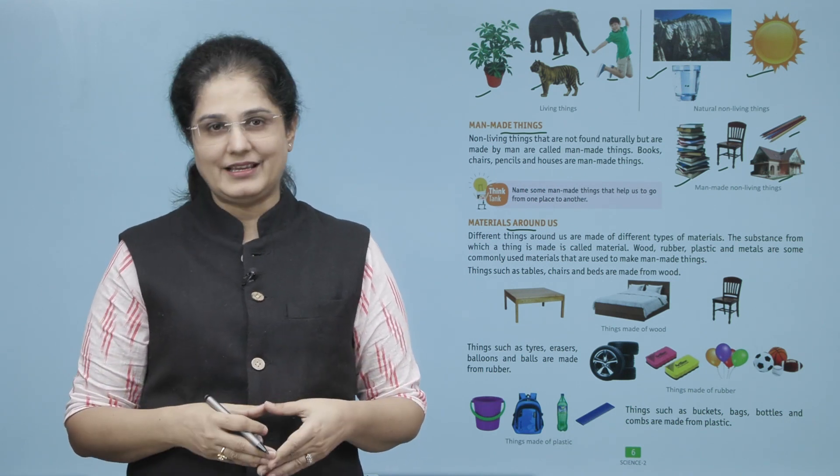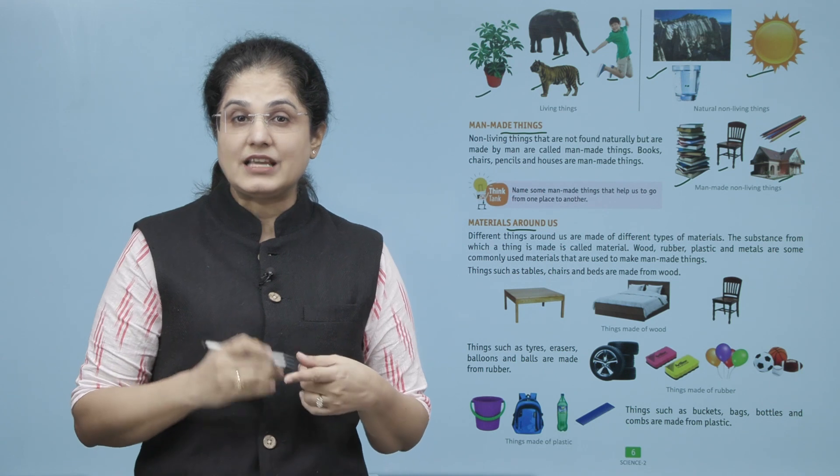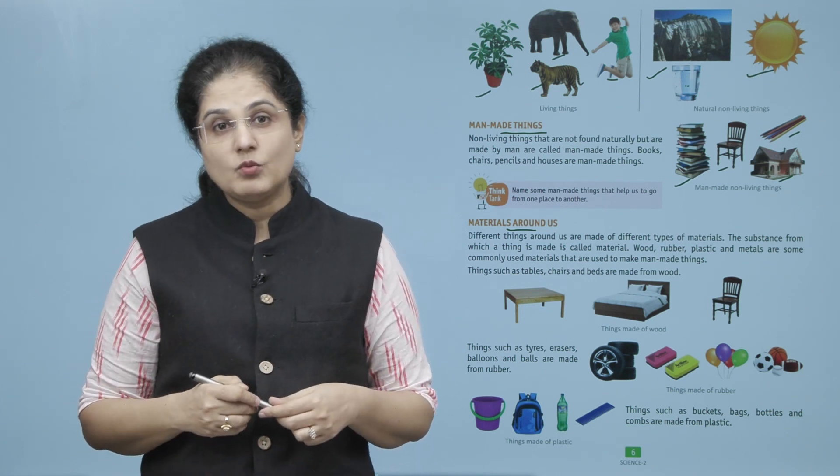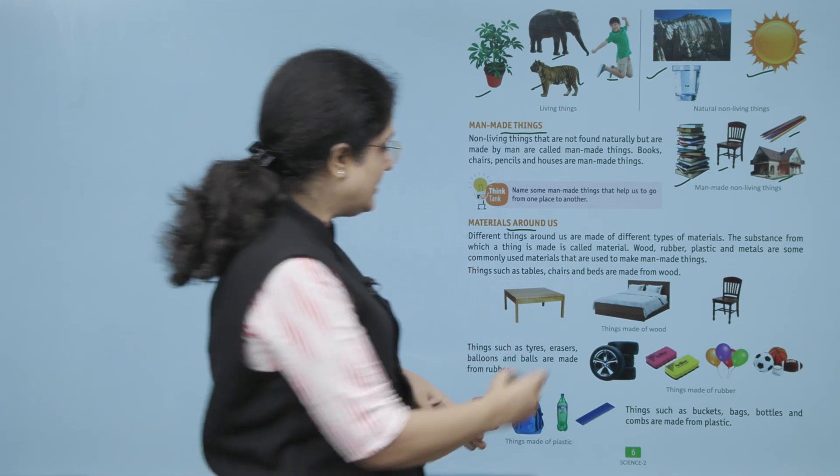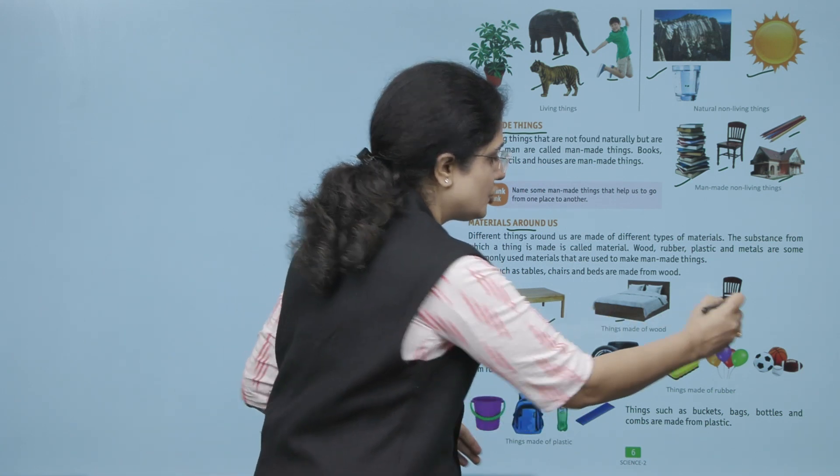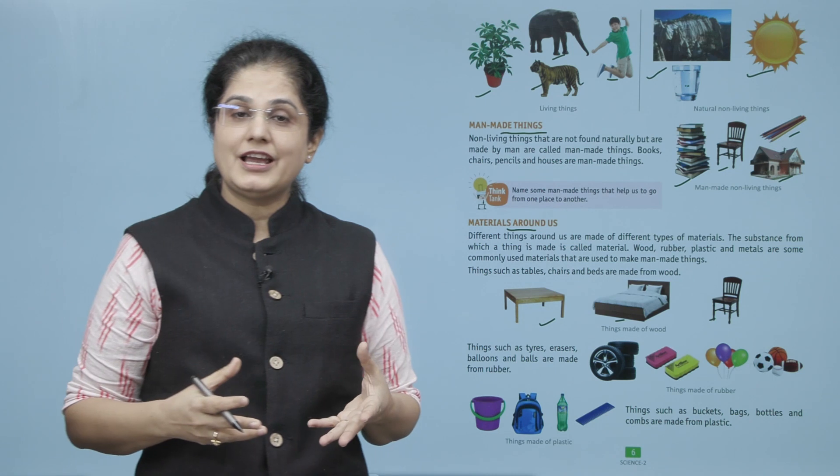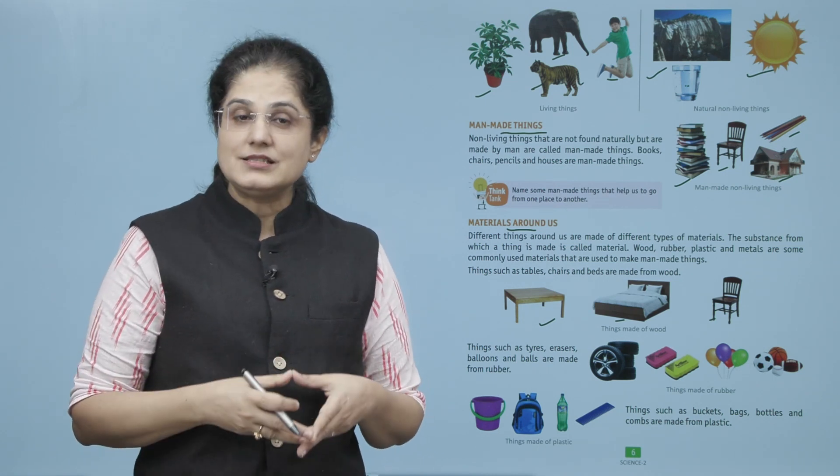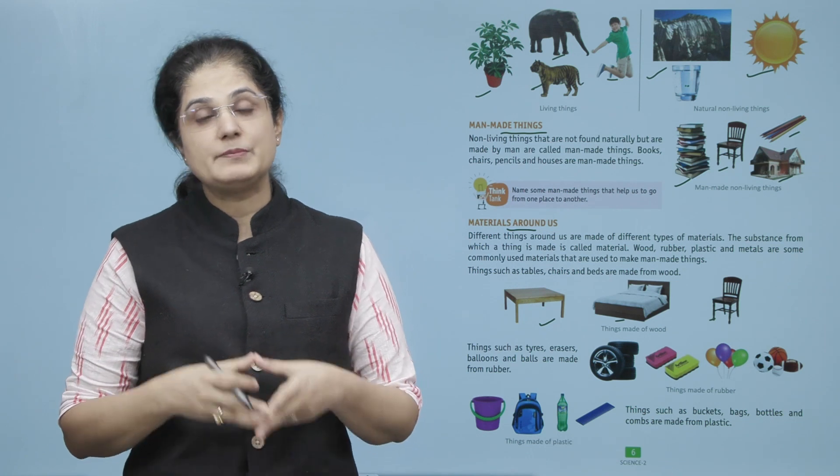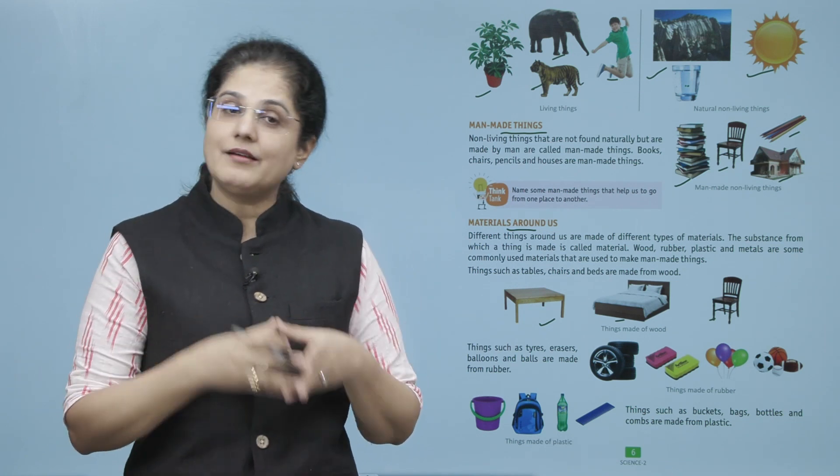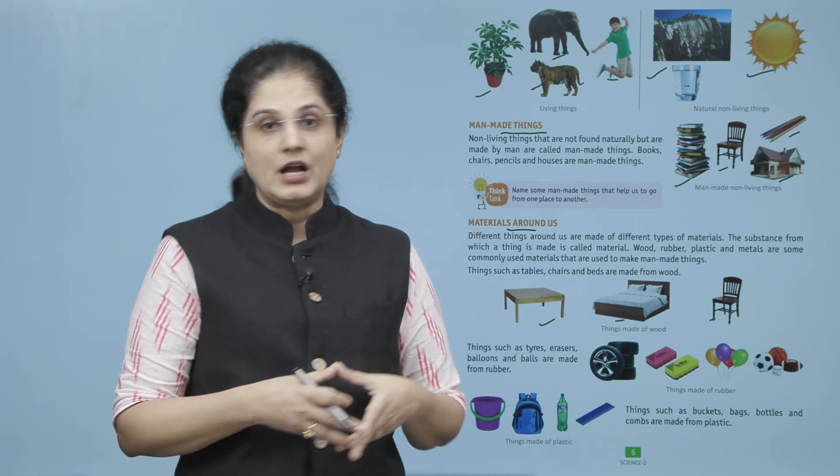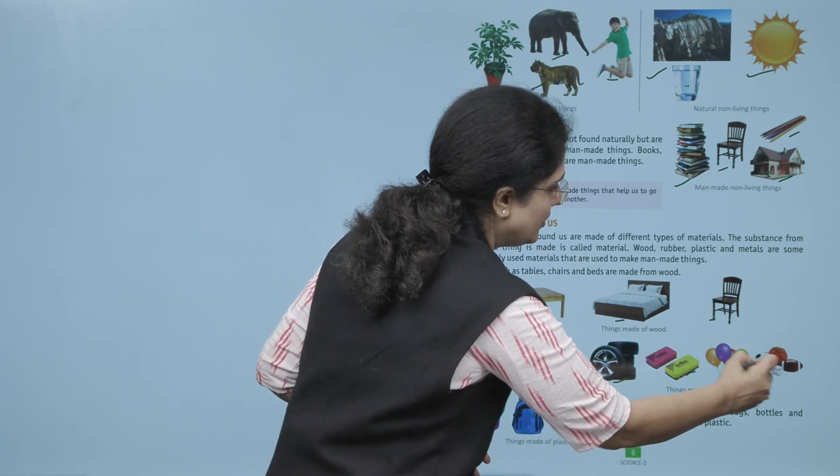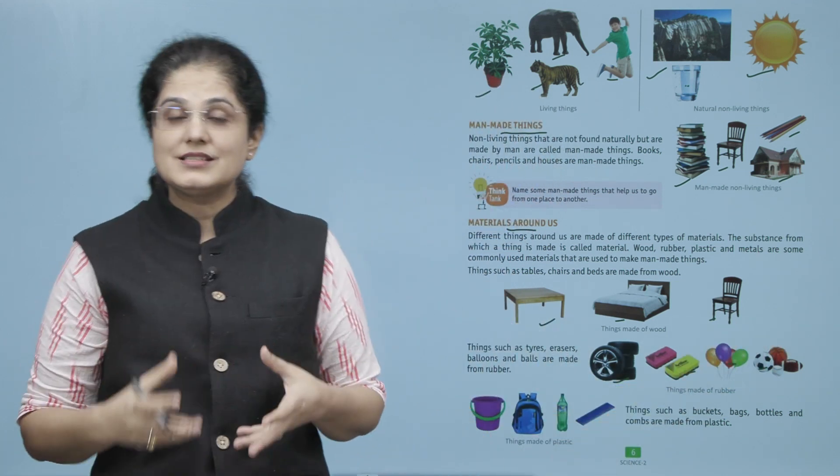Things such as tables, chairs, and beds are made from wood. Agar aap dekh sakte hai, yeh table, bed, ya jo chair hai, yeh aise chizhe hai jo ki lakdi se banti hai. Things such as tires, erasers, balloons, and balls are made from rubber. Yeh kuch aise chizhe hai jaise ki yeh tire ho gaya, yeh aapke erasers ho gaya, ya balloons ya balls ho gaya, yeh kinse bantate hai? Yeh ek material jis se hum rubber kehte hai, usse bantate hai.